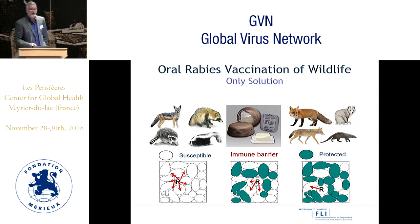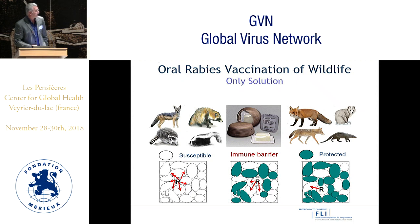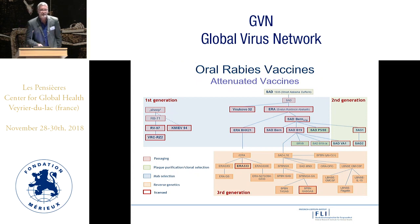In principle, you can vaccinate wildlife species by the parenteral route using inactivated rabies virus vaccines, but it is impractical and therefore not an option. In order to create an immune barrier within wildlife reservoir species to interrupt the infectious cycle and stop transmission of the disease, the only solution is oral vaccination, and here we can rely on a number of attenuated rabies virus vaccines.